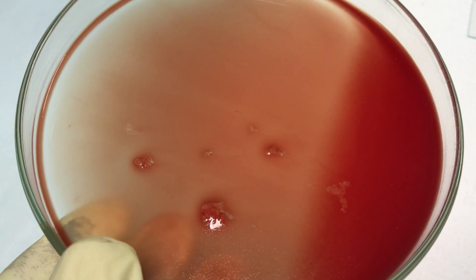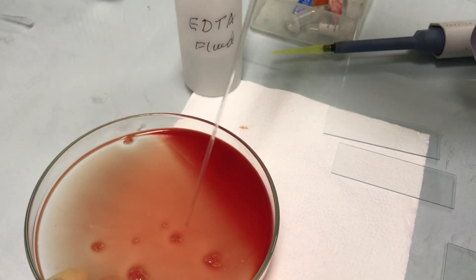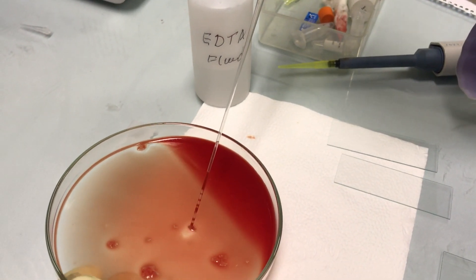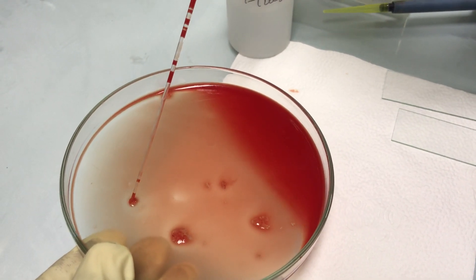We can collect the marrow particles by using a Pasteur pipette. The sandy granular structures are collected and placed over a glass slide.